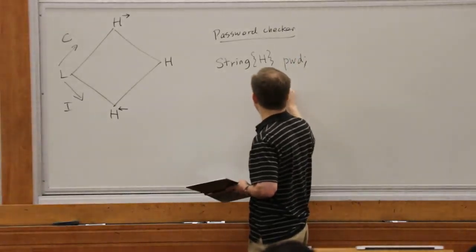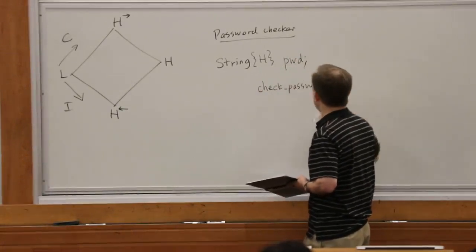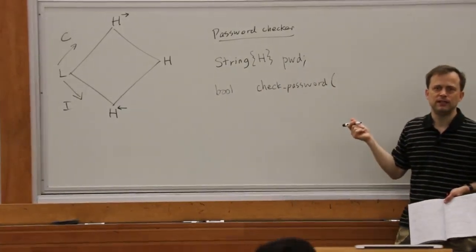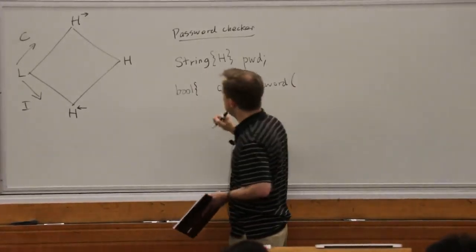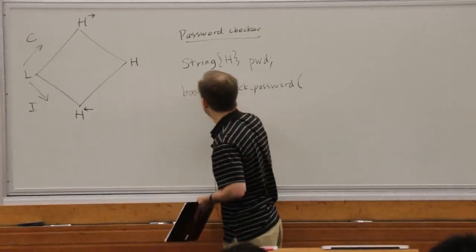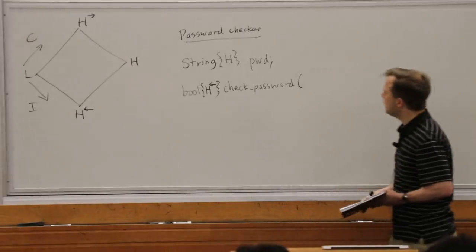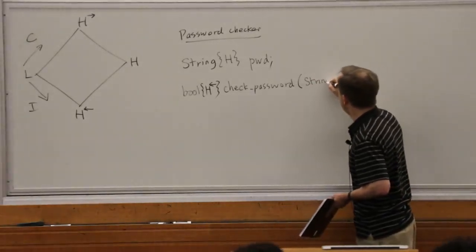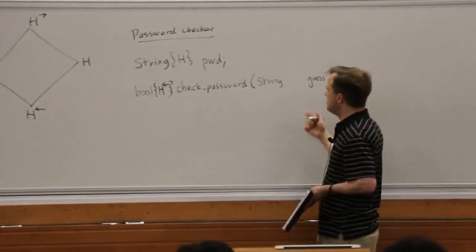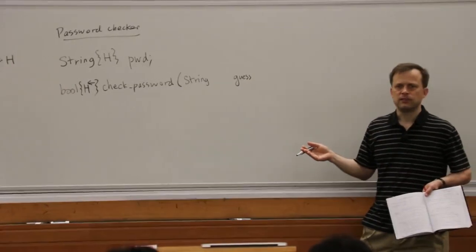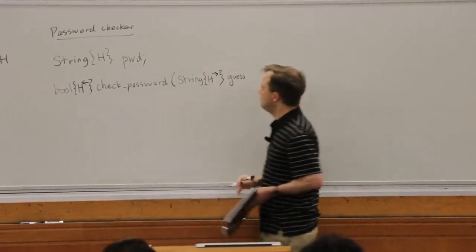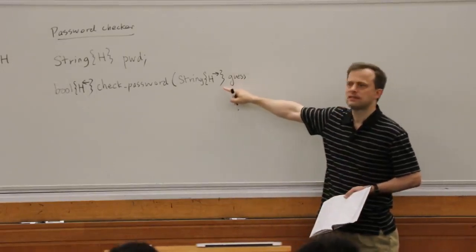We want to check the password for the function, and it's going to return a result. The result of the check password routine needs to be visible to the adversary — it's a boolean that is going to be public, but it also should be trusted. We want to be able to trust the answer. Now we're supposed to take in a guess. The guess is coming from the adversary, so it's clearly not a trusted thing. It seems reasonable to treat it as something that is confidential but not trusted.